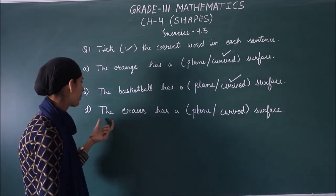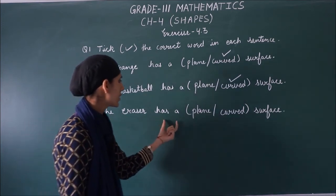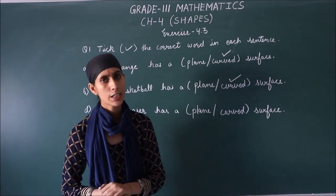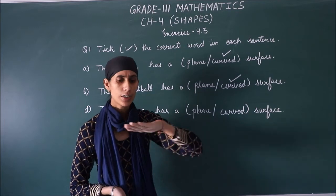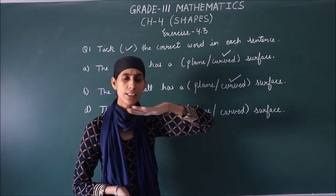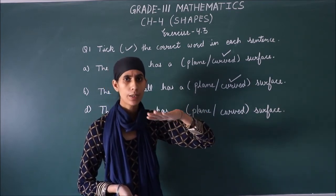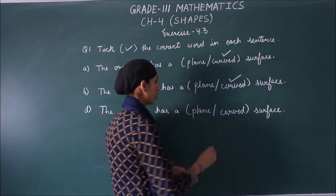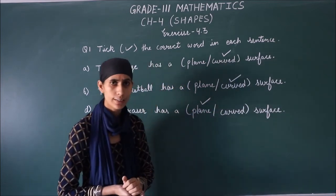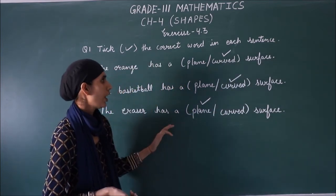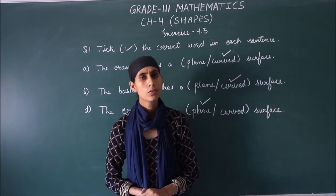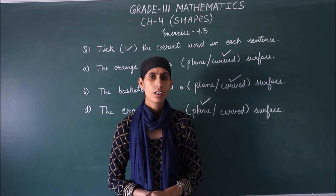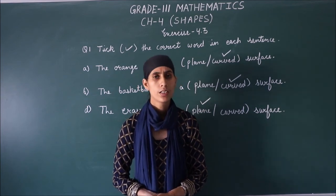Next, the D part is you have the eraser has a plane and curved surface. You can check it all because you have an eraser. So if you look and touch the eraser surface, how does the eraser surface look like? Plane. When we touch it, it also becomes plain. So our eraser, which surface will be the plane surface, so we will click on the plane. So I hope you understand this question. In the next video I will explain the next question of exercise 4.3. Still if you have any query, you can contact me, thank you.